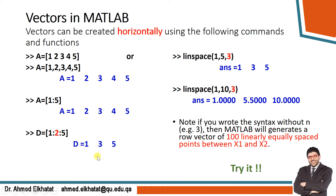The built-in function linspace is very helpful for creating horizontal vectors. With linspace you put the first number, the last number, and the number of points. Note: with the colon operator you specify the increment value, but with linspace you specify the total number of points. For example, linspace(1, 5, 3) gives one, three, five.